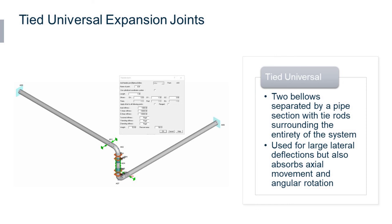The tie rods in a universal expansion joint can be modeled in AutoPipe using either of the two methods mentioned earlier, but I definitely recommend using method two by using beam elements.